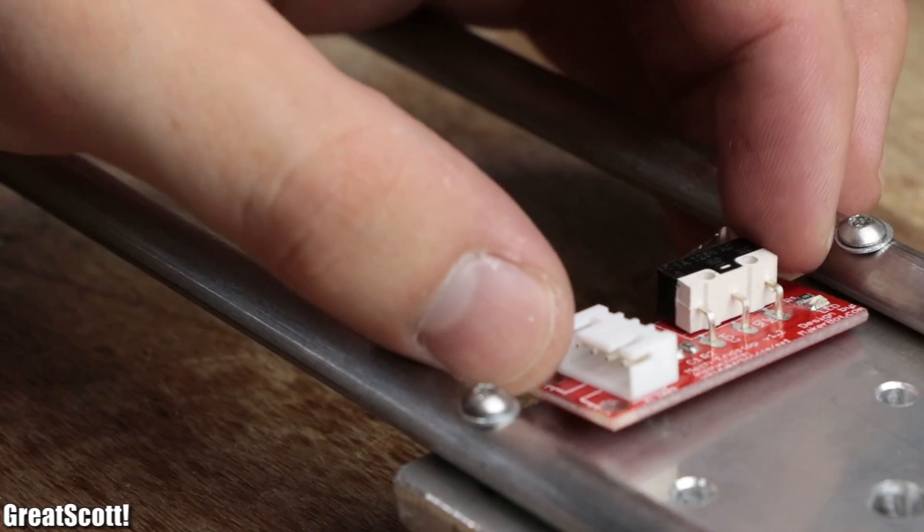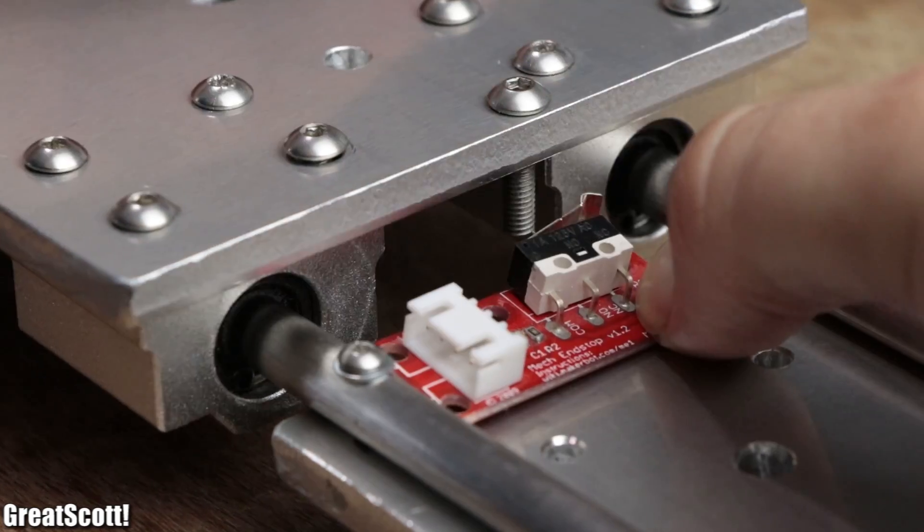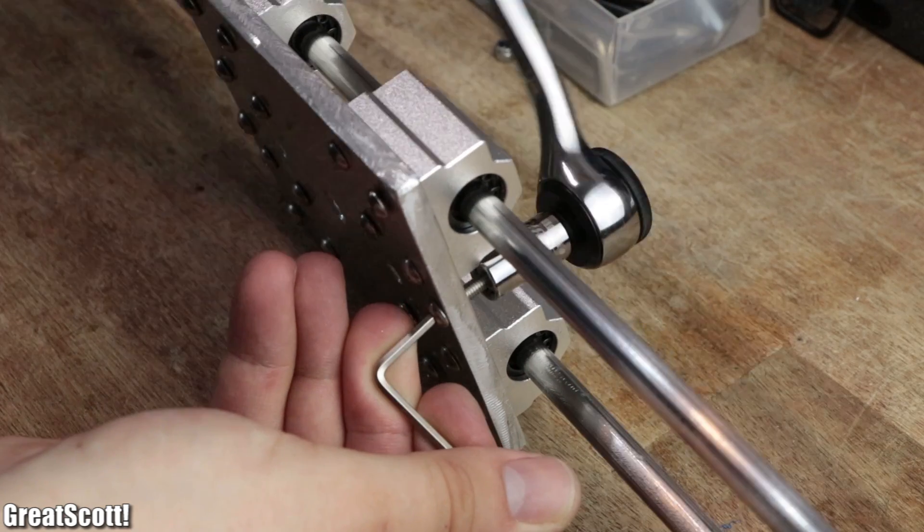Next I positioned the limit switches, checked whether the limit bolts would activate them, which they did, and thus secured them to the moving platform.